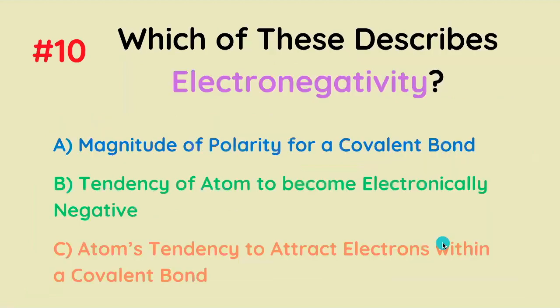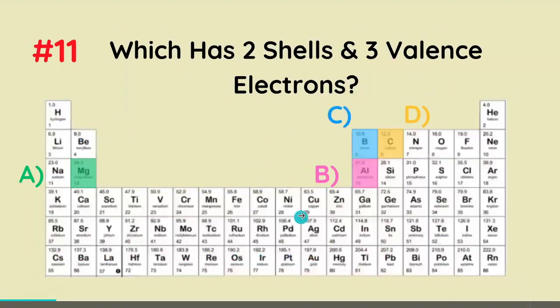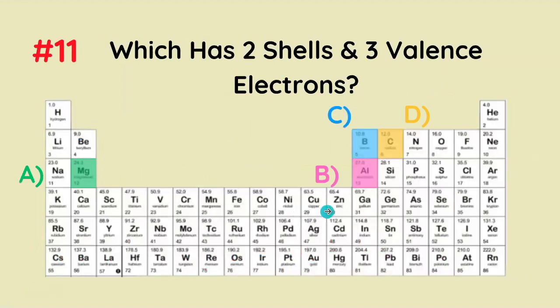Which of these describes electronegativity — what's the definition of electronegativity? The atom's tendency to attract electrons within a covalent bond.